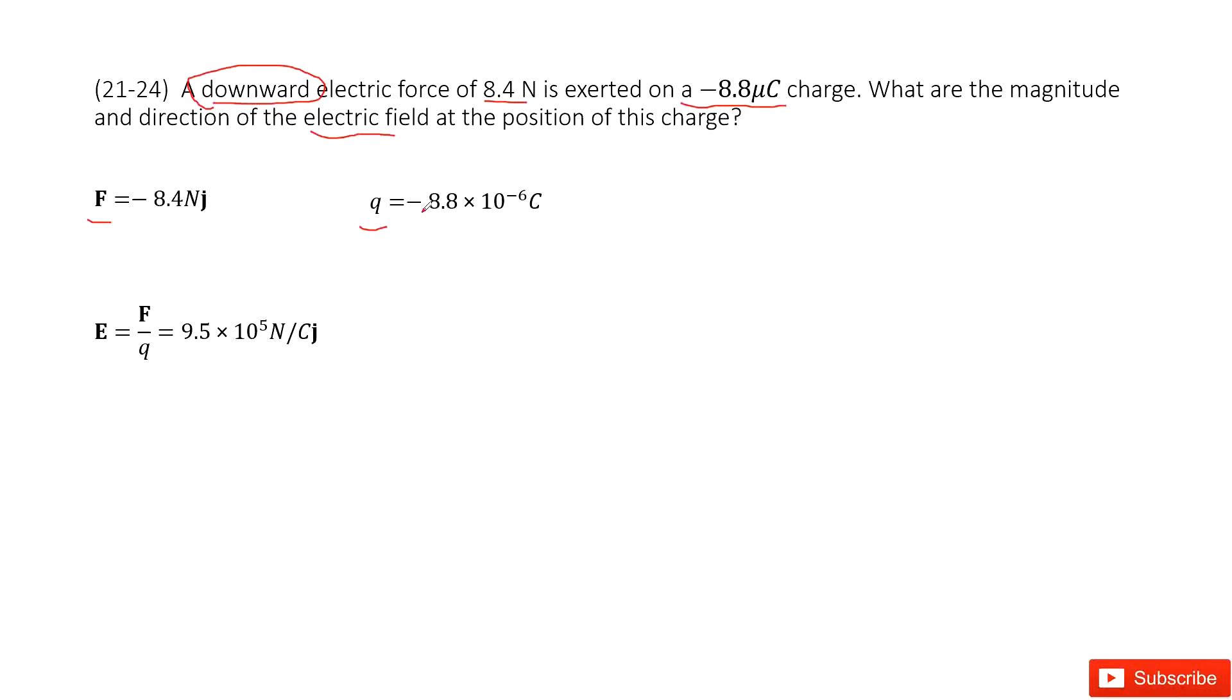You can see, this negative sign, negative sign cancelled. So we get the positive y direction. So now this electric field is pointing to upward, just the positive y direction, magnitude is there.